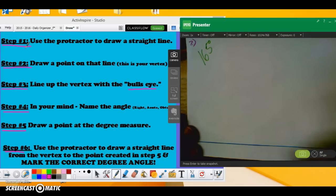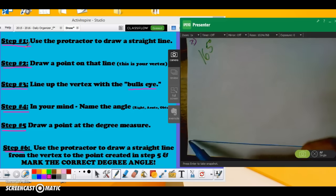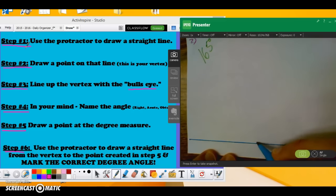Step 2, draw a point on that line. Now you don't want to draw that point all the way over here on the left and you certainly don't want to draw it all the way over here on the right. You want to draw it right here in the middle of the line. That way if it's in the middle you can certainly draw angles coming out of either way.